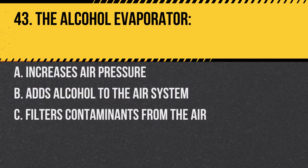Question 43. The alcohol evaporator: A. Increases air pressure. B. Adds alcohol to the air system. C. Filters contaminants from the air. Answer B. Adds alcohol to the air system. It prevents ice from forming in cold weather.